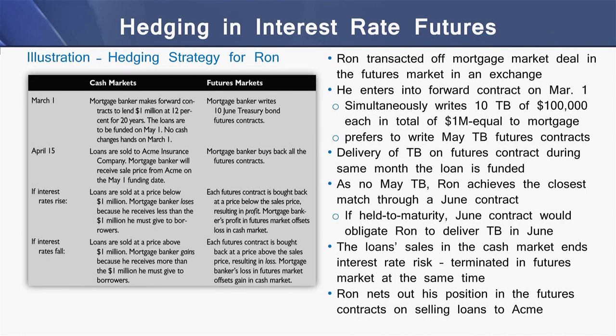The delivery of these Treasury Bonds on forward/futures contracts occurs during the same month the loan is funded to the borrowers. As there is no May Treasury Bond, the loan achieves the closest month, which is June — so he has a contract in June. If held to maturity, the June contract would obligate Ron to deliver Treasury Bonds in June. The loan sale in the cash market ends the interest rate risk that is hedged in the futures market, and Ron nets out his position in the futures market while selling his mortgage loans to Aceman.